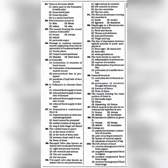Question 84: Damage to the common extensor muscle originating from the lateral epicondyle of the humerus leads to — the answer is option 1: Tennis elbow. Question 85: The torticollis — the answer is option 2: Contraction of sternomastoid muscles occurs. Question 87: In Dupuytren's contracture, there is — the answer is option 4: Ring and little fingers are flexed.